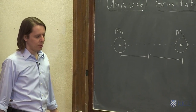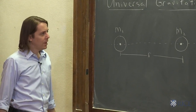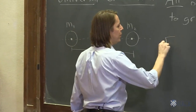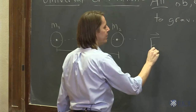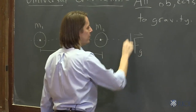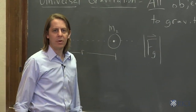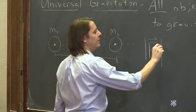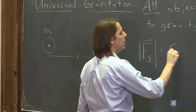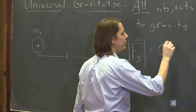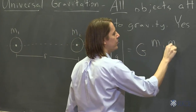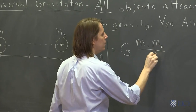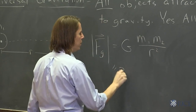The masses don't have to be the same. The force between them — we know force is a vector, but first we want to calculate just the magnitude. It's equal to a new constant, big G, times the mass of the first times the mass of the second, divided by the separation squared.